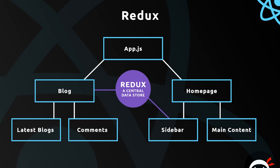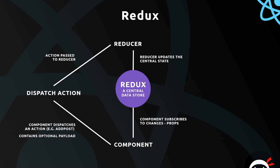Now if we wanted to change the data as well, we can do that from these components. The sidebar could make a change and the updated data would be passed to the Blog component and update elsewhere in the application. But components can't just directly edit it — that would be unsafe and may result in unpredictable code. So there is a process when working with Redux. We define a central store where our data is kept. If a component wants to access some of that data, it subscribes to changes, and Redux passes that data to the component in the form of props.